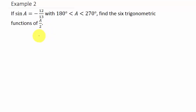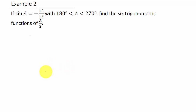We don't have formulas for cosecant, secant, and cotangent, but that's fine. If we can find sine of A over 2, then cosecant of A over 2 is just the reciprocal of sine A over 2. And secant of A over 2 is the reciprocal of cosine A over 2. And cotangent A over 2 is the reciprocal of tangent of A over 2.